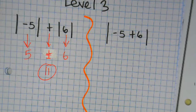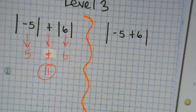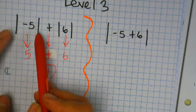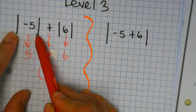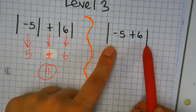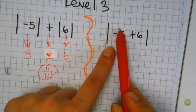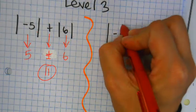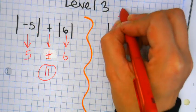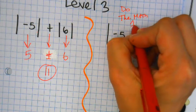Alright, so kind of like Sofia, what you were saying, and Marcos to a degree. Here you have individual bars, individual bars, individual bars. Here you have them together. The problem is inside the bars. So you're going to have to do the math first.